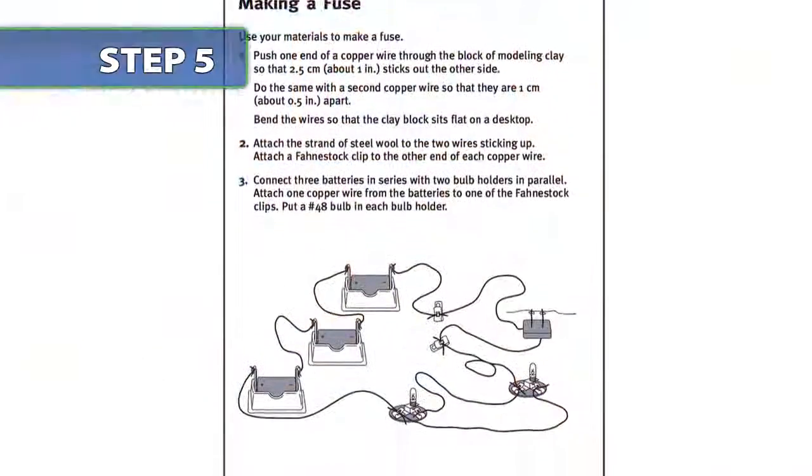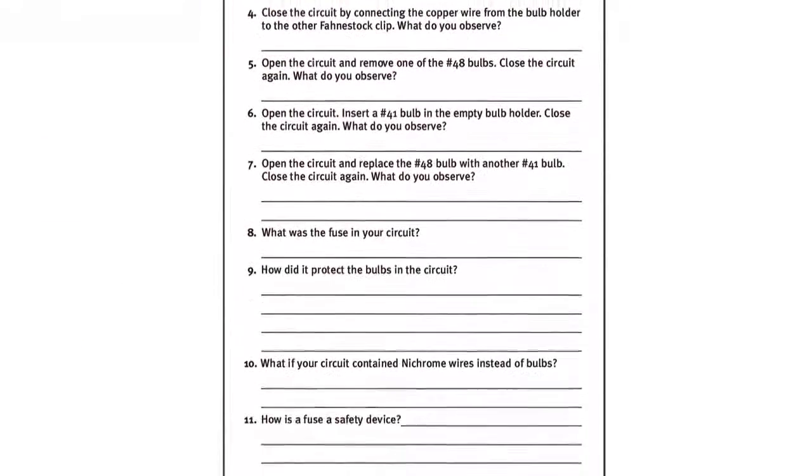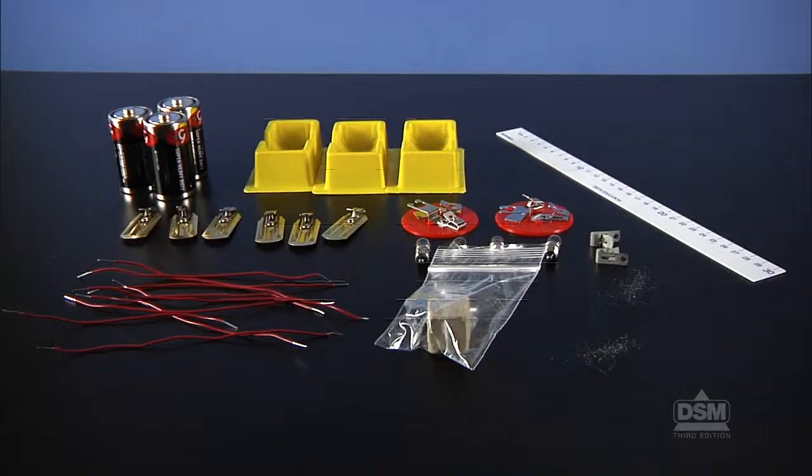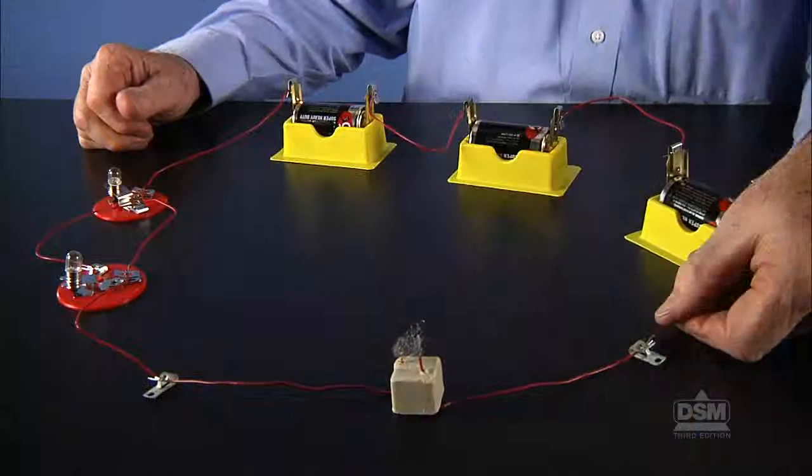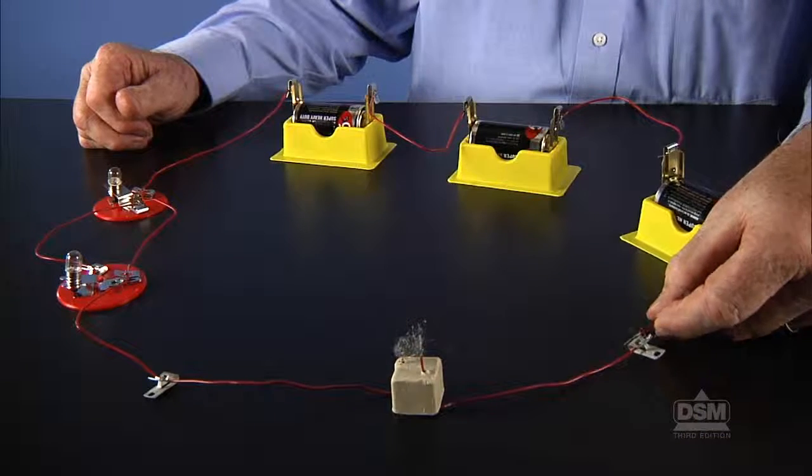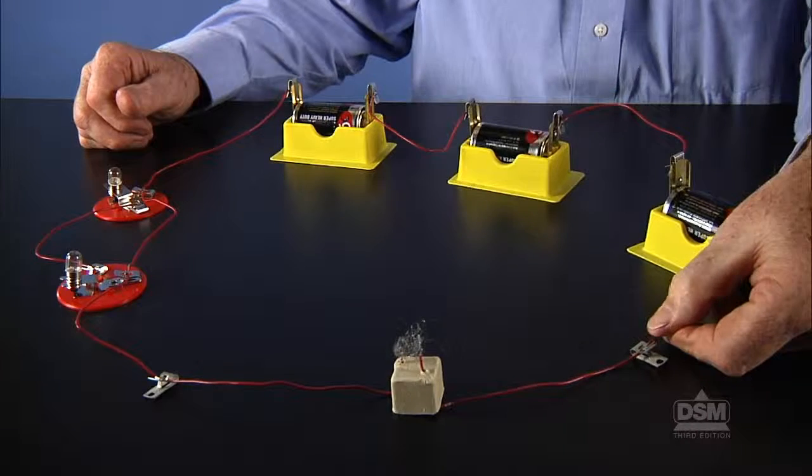Distribute a copy of Activity Sheet 11 Parts A and B to each student and the materials to each team. Then, instruct teams to build their fuse setups and test them according to the instructions on Activity Sheet 11 Parts A and B. Remind students to record their observations.